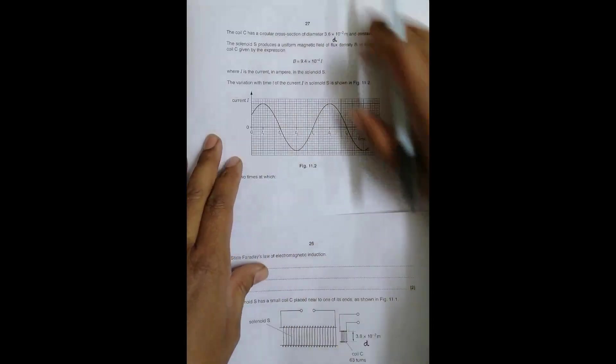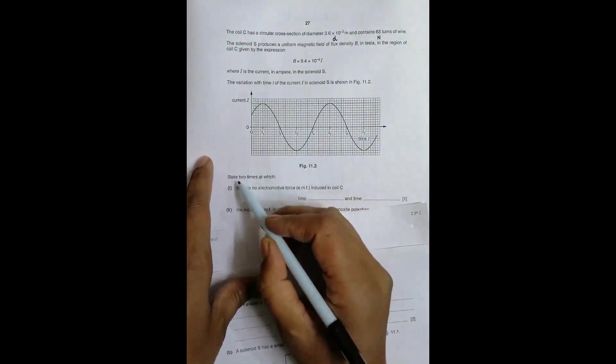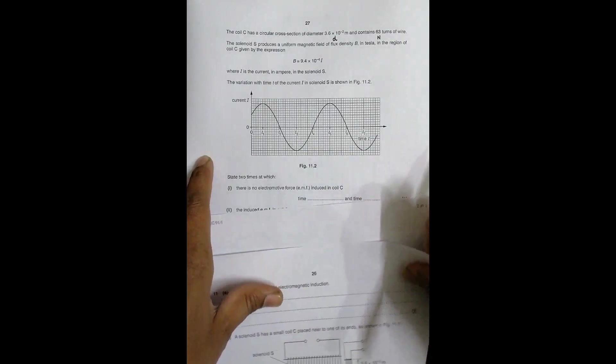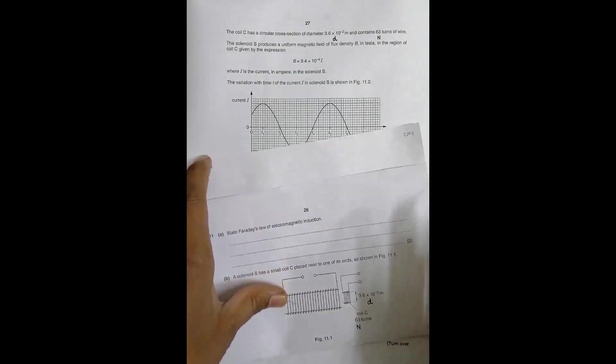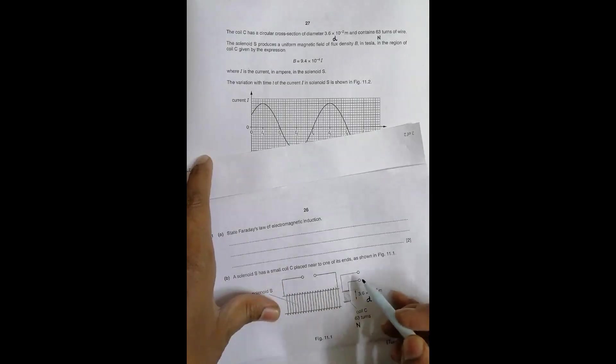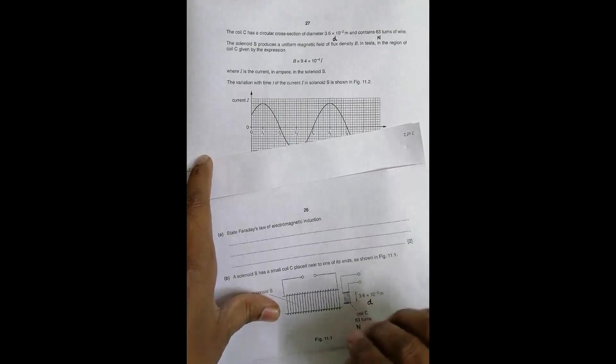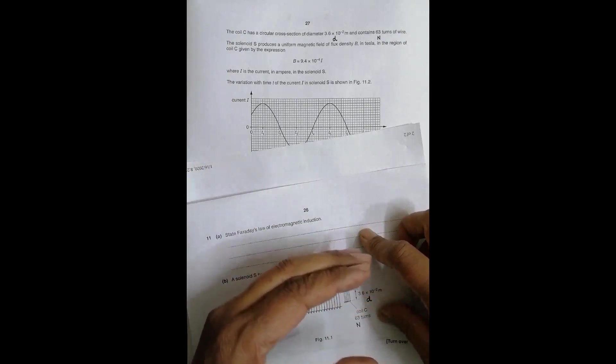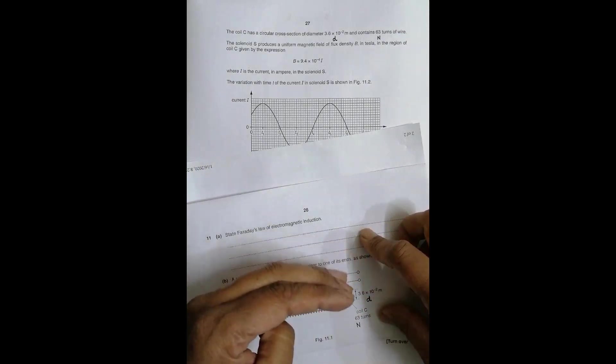State two times at which there is no EMF induced in coil C. When current changes here, the field lines also change. When current changes, number of field lines also change. If current is constant, the field lines will also be constant, that means they will not change. At the resting phase of current, flux is not changing through the coil.